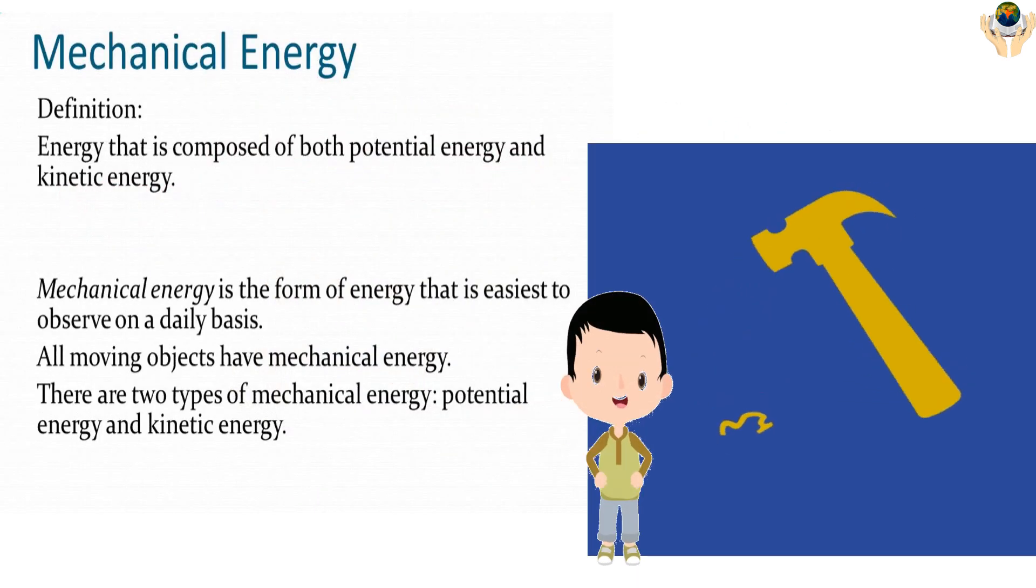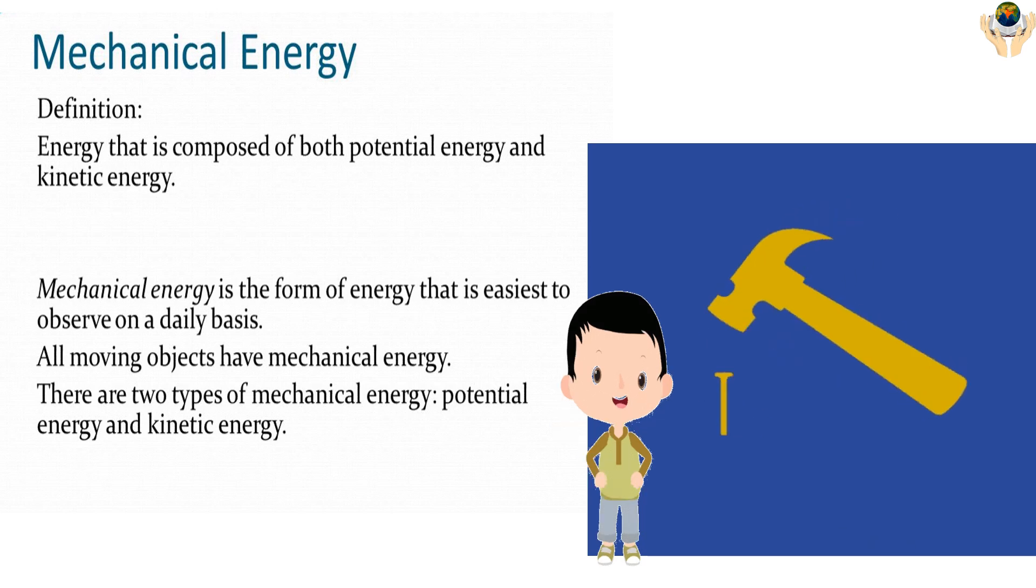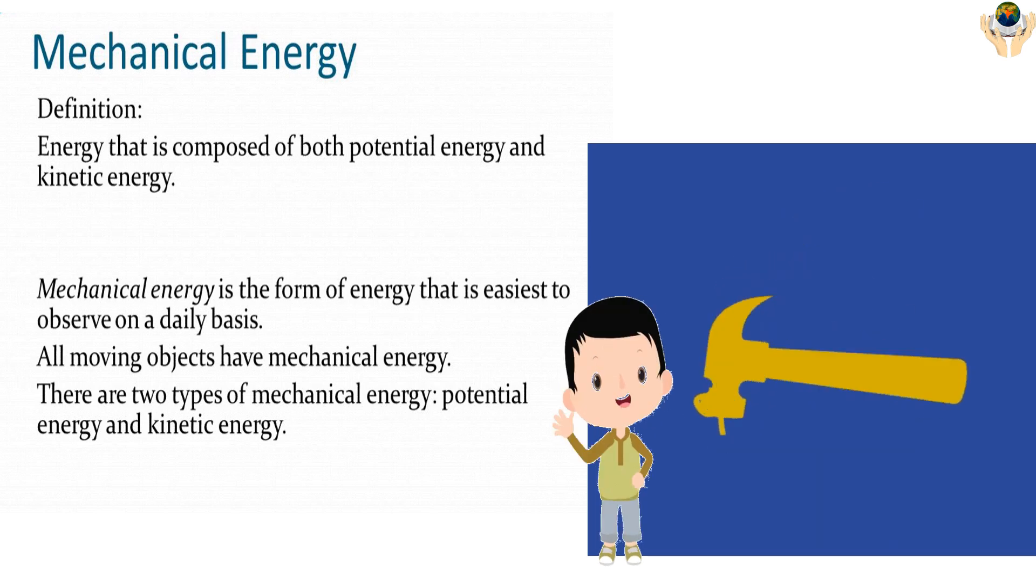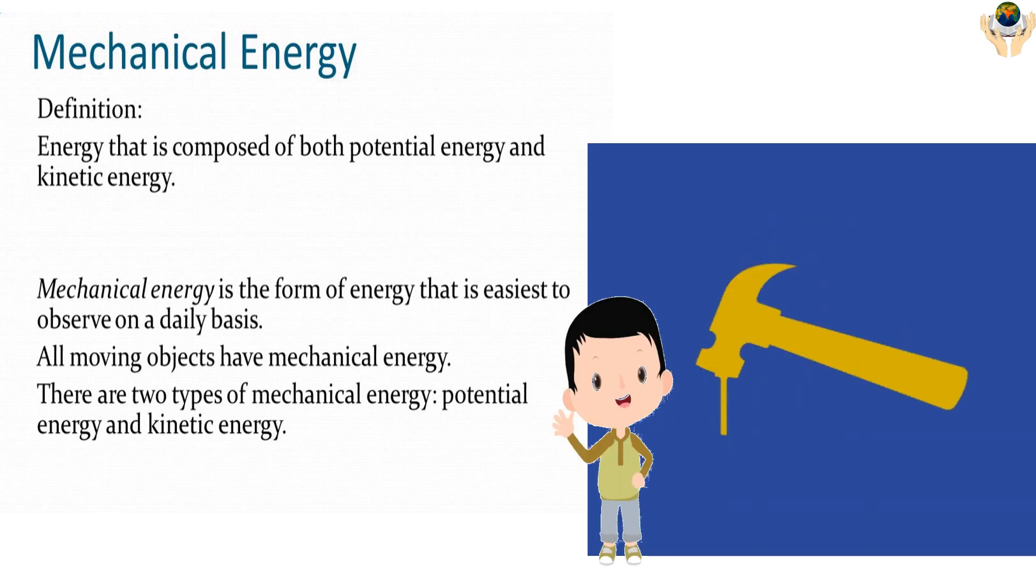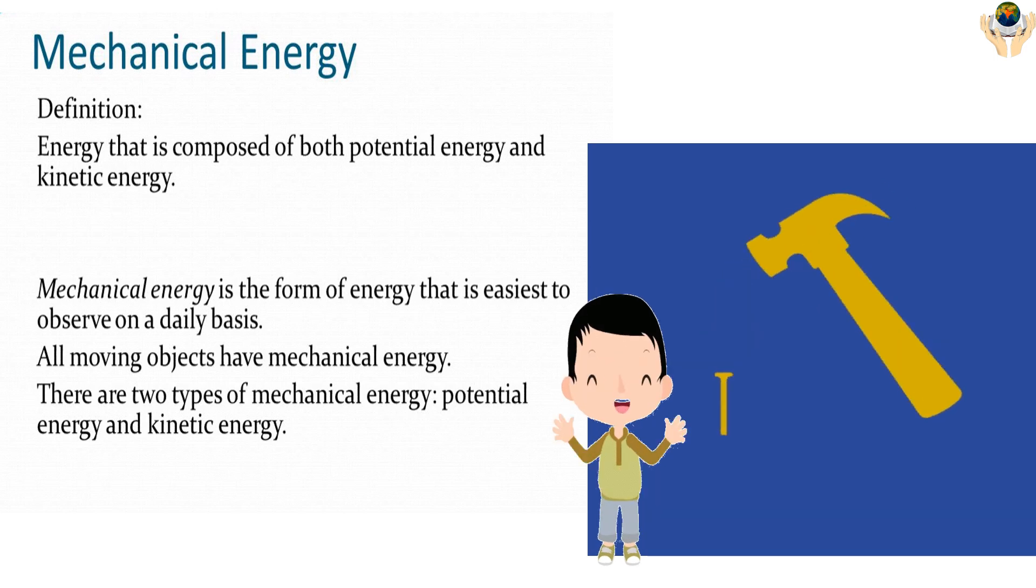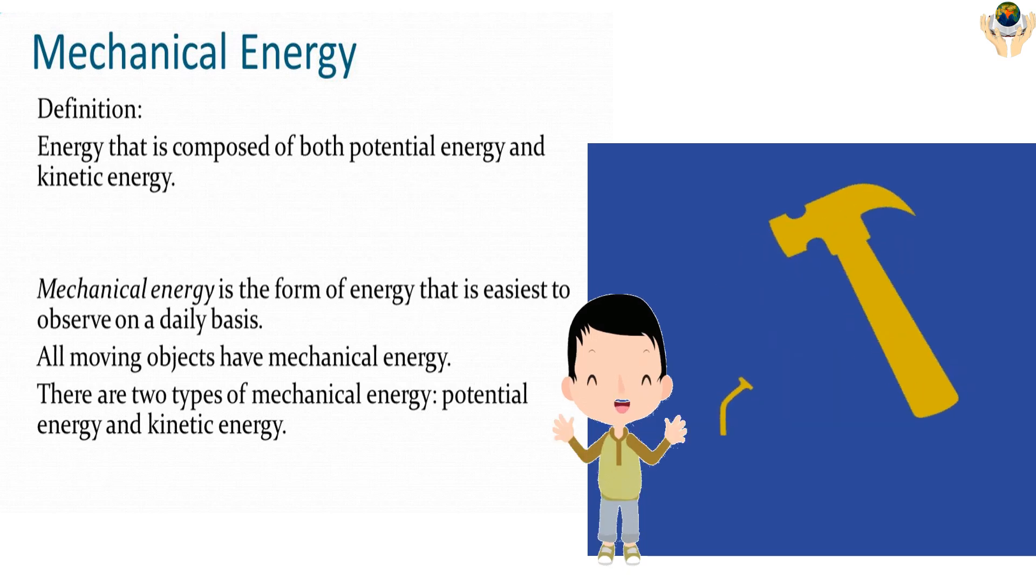Mechanical energy is composed of both potential and kinetic energy. Mechanical energy is the form of energy that is easiest to observe on a daily basis. All moving objects have mechanical energy. There are two types of mechanical energy: potential energy and kinetic energy.